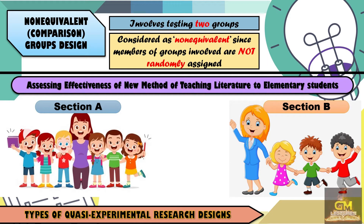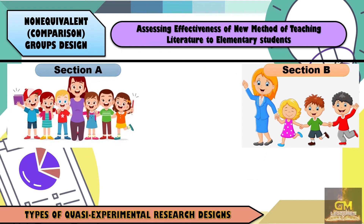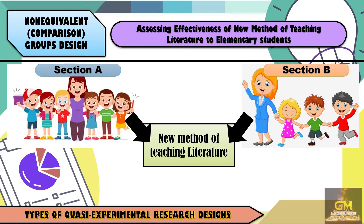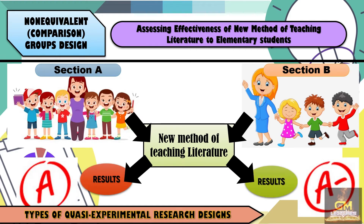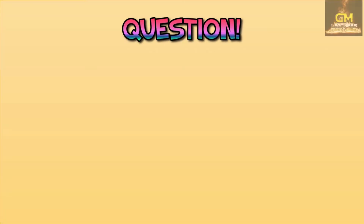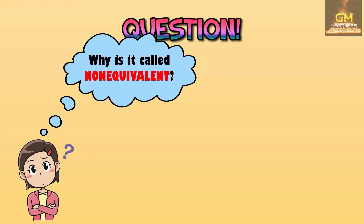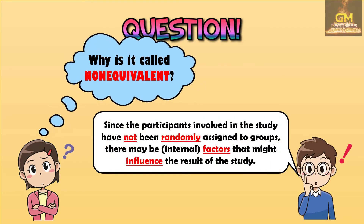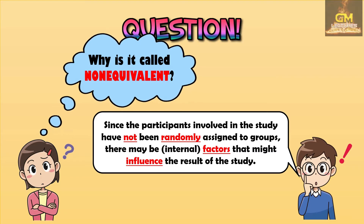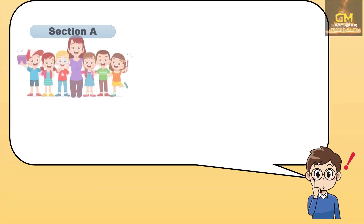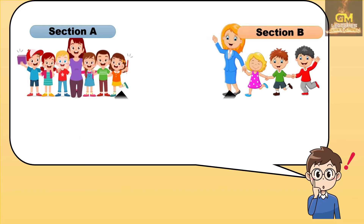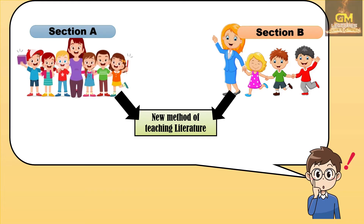We have section A and section B. After the participants have already been identified, both of them will undergo the new method of teaching literature. This is considered as the intervention in this particular example, after which they will have a post-test wherein the results will be identified. Now, before we continue, let's answer this short question: Why is it called non-equivalent? Since the participants involved in the study have not been randomly assigned to groups, there may be internal factors that might influence the results of the study. Both sections will have the post-test in order to identify the results of each section.